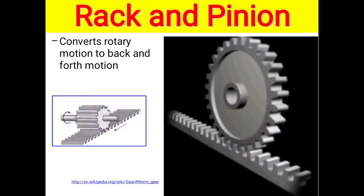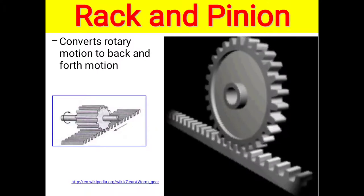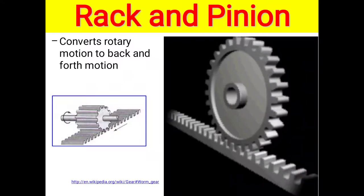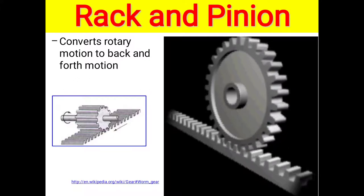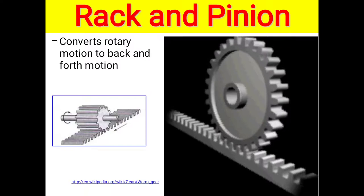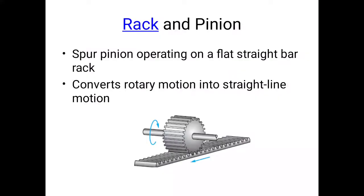Rack and pinion: another type of gear. In this type, one flat plate is cut with teeth on its top surface, and a wheel rotates on that flat surface to transmit motion and speed for various purposes. Converts rotary motion to back-and-forth motion. You see these motions in rack and pinion using this diagram. Spur pinion operating on flat straight bar rack. These two gears have opposite directions. Converts rotary motion into straight-line motion.